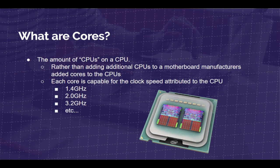Processors have a certain clock speed, which allows them to execute their tasks — they fetch information, decode it, and then execute, delivering information to different components inside the computer. The clock speed is the speed at which a processor can do that. If you have a single core at 1.4 GHz, that's a 1.4 GHz single-core processor. As you add cores, each core in that processor is capable of reaching those speeds individually.